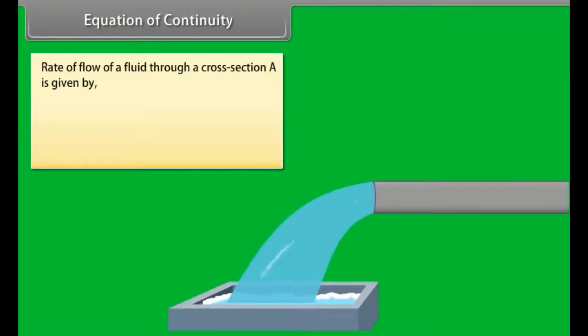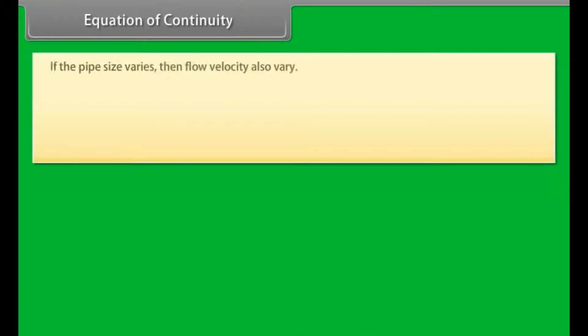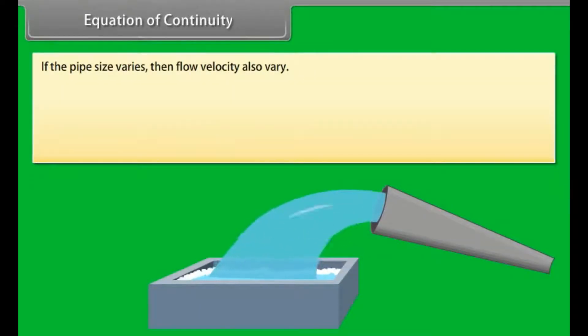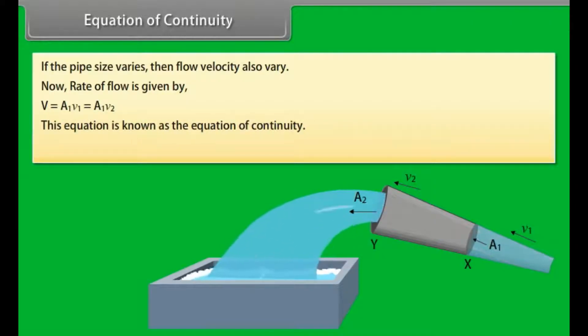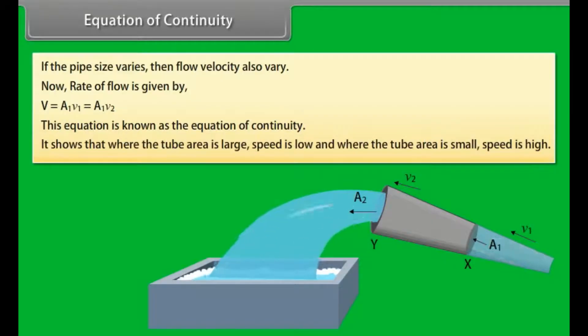Equation of Continuity. Rate of flow of a fluid through a cross section A is given by V = AV, where V is the velocity of the fluid and capital V is the volume of the fluid. If the pipe size varies, then flow velocity also varies. Now, rate of flow is given by V = A₁V₁ = A₂V₂. This equation is known as the equation of continuity. It shows that where the tube area is large, speed is low, and where the tube area is small, speed is high.